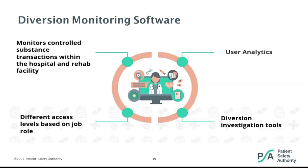Diversion monitoring software tracks the dispenses, administrations, waste, and returns of controlled substances. Nurse managers and pharmacy look at open variances to monitor for drug diversion. Notes should be entered on every variance prior to them being closed for better tracking. The software can break down the number of controlled substance transactions on each unit, the number of discrepancies closed, and system data on the average time between dispense, administration, and waste for each unit. There are different access levels — nurse managers only have access to the areas they are responsible for. User analytics monitors full package waste, waste partners, time between dispense, administration and waste, return dispenses without corresponding administrations, and the number of variances.